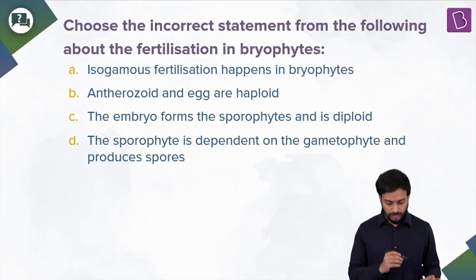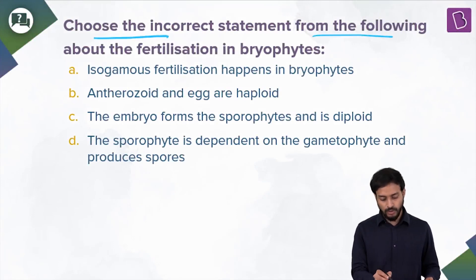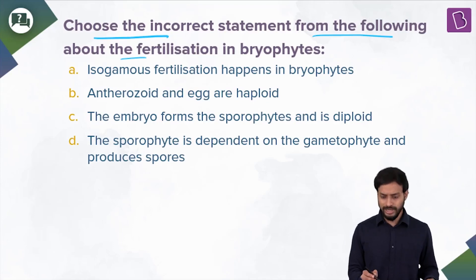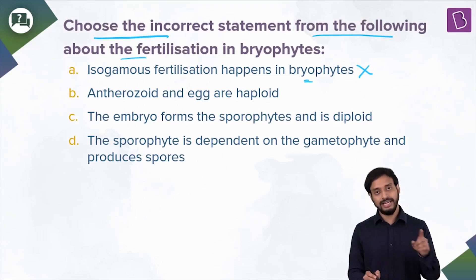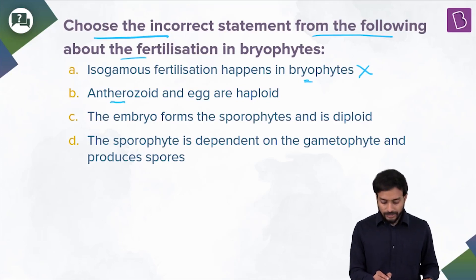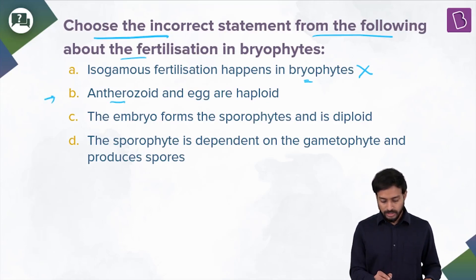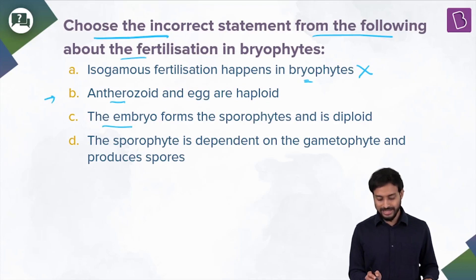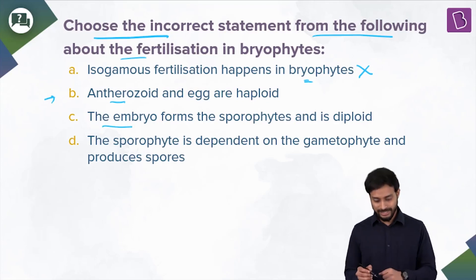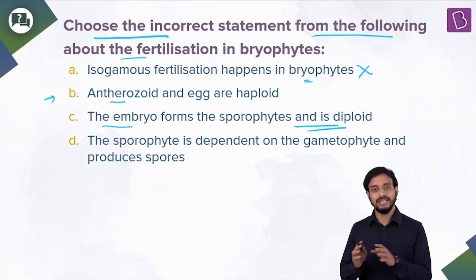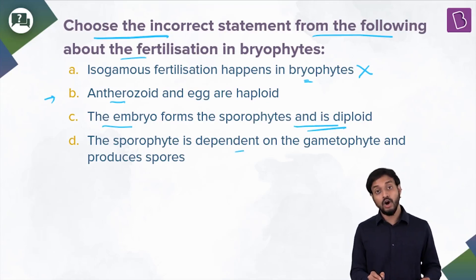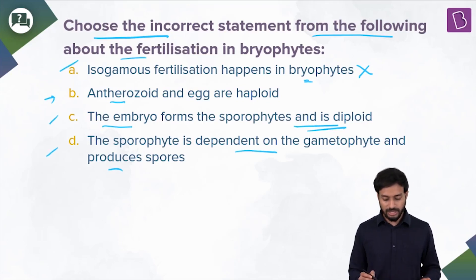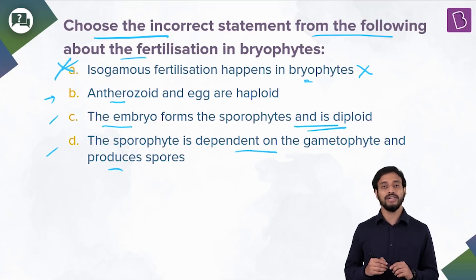For this question, we have to choose the incorrect statement about fertilization in bryophytes. Statement A: isogamous fertilization happens in bryophytes — this seems incorrect because it is anisogamy that occurs in bryophytes. Statement C: antherozoid and egg are haploid — that is true. Statement: the embryo forms sporophytes and is diploid — yes, the sporophyte is formed from the embryo and it's diploid. Statement: the sporophyte is dependent on the gametophyte and produces spores — correct. The incorrect answer is option A.